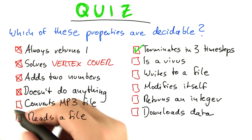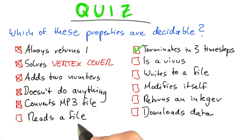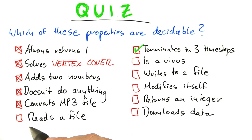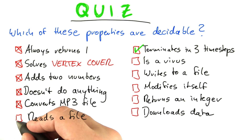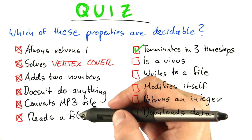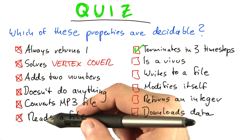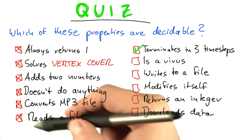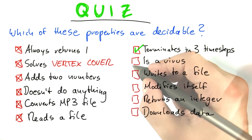'Converts an MP3 file,' 'reads a file' — that is an interesting one because you could argue it doesn't fall under Rice's theorem. But even if you have that argument, it's still not decidable. Because I can modify any program so that it will only read a file once it's done, and that again would allow me to solve the halting problem.